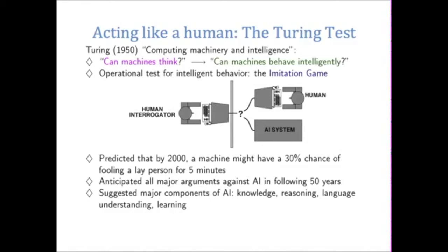Turing was a deep thinker and he anticipated pretty much all the major arguments against AI in the following 50 years. He also suggested the major components of artificial intelligence: knowledge, reasoning, language understanding, and learning. As we've seen in the course, these are the kinds of things that people doing AI research and development need in order to have intelligent systems.